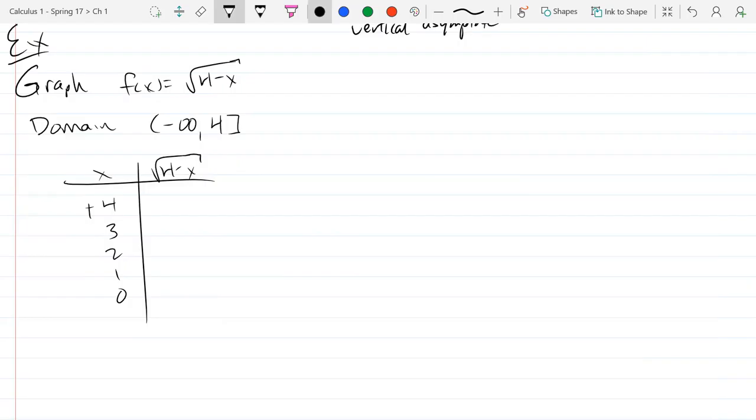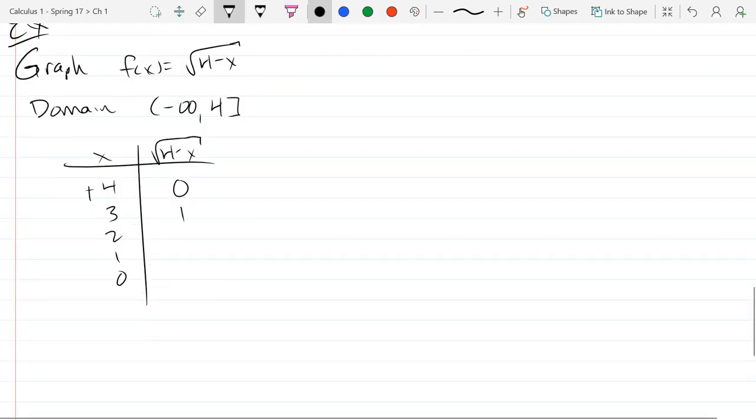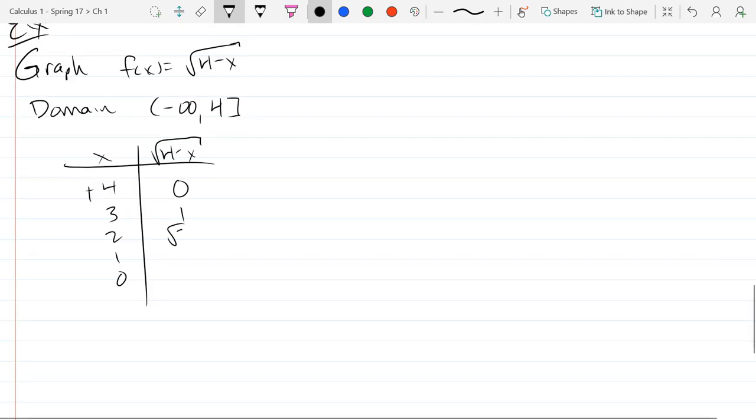So here we have square root 4 minus x, which is square root 0, that's 0. 4 minus 3 is 1, square root is 1. 4 minus 2 is 2, so that's square root 2. 4 minus 1 is 3, square root 3. 4 minus 0 is 4, square root 4, which is 2.